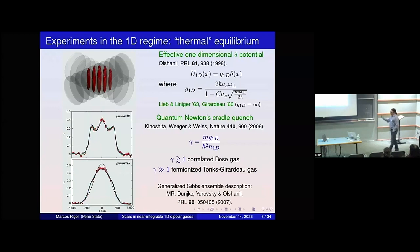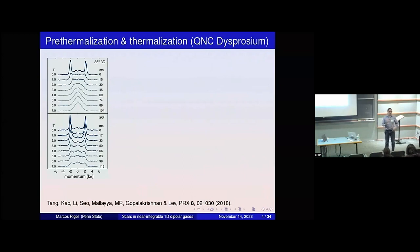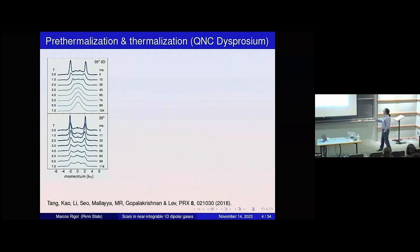We know that the way to think of those systems after equilibration is to introduce a generalized Gibbs ensemble—that's the basis of another idea I'll discuss later. You might say 'he didn't wait long enough,' so let me show you how remarkable these 1D gases are by comparing them to 3D. This was done by Ben Lev at Stanford using dysprosium, which on top of contact interaction has a dipolar interaction.